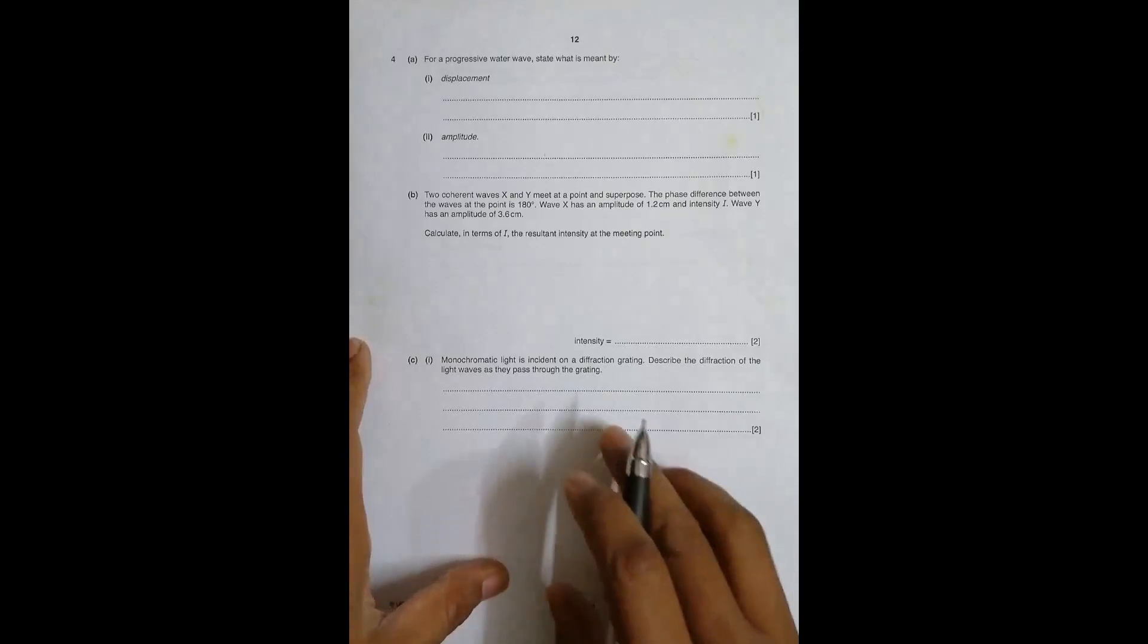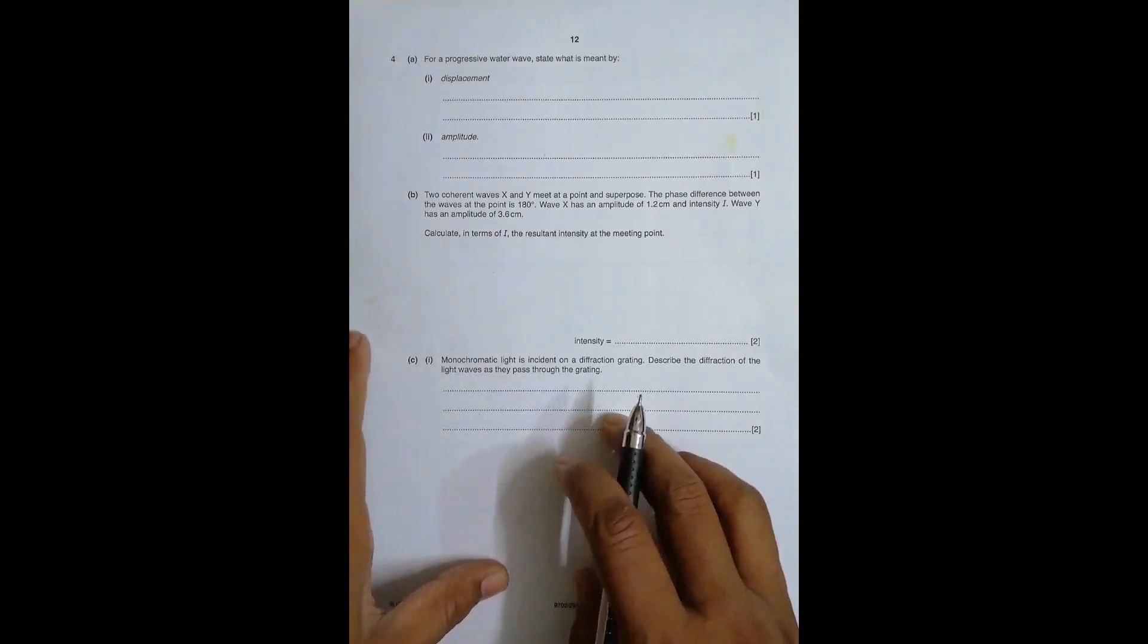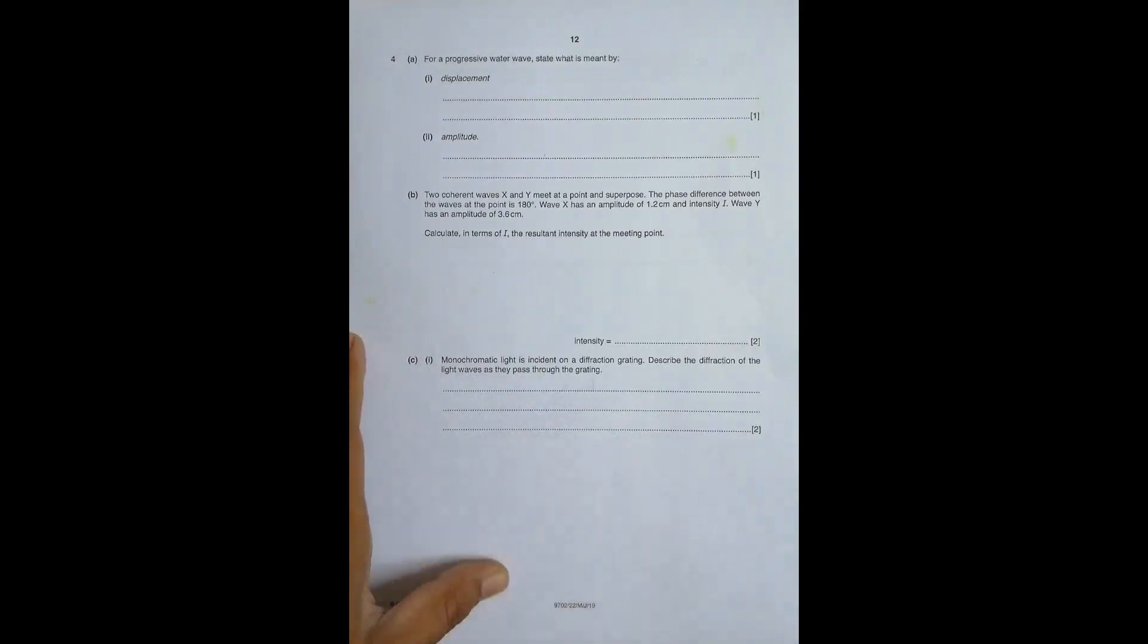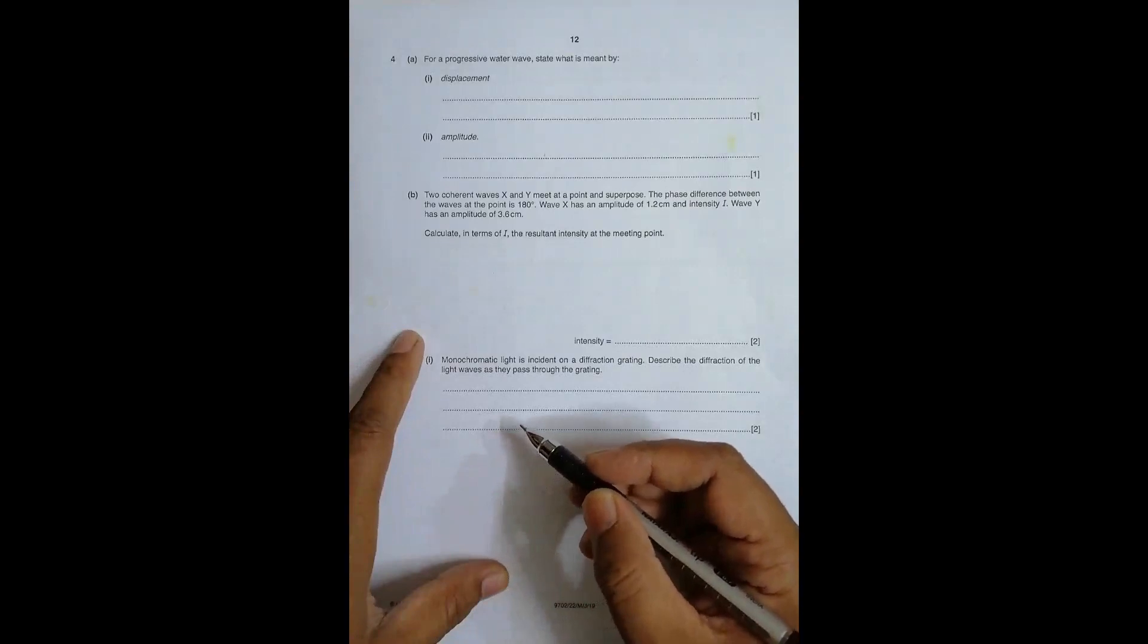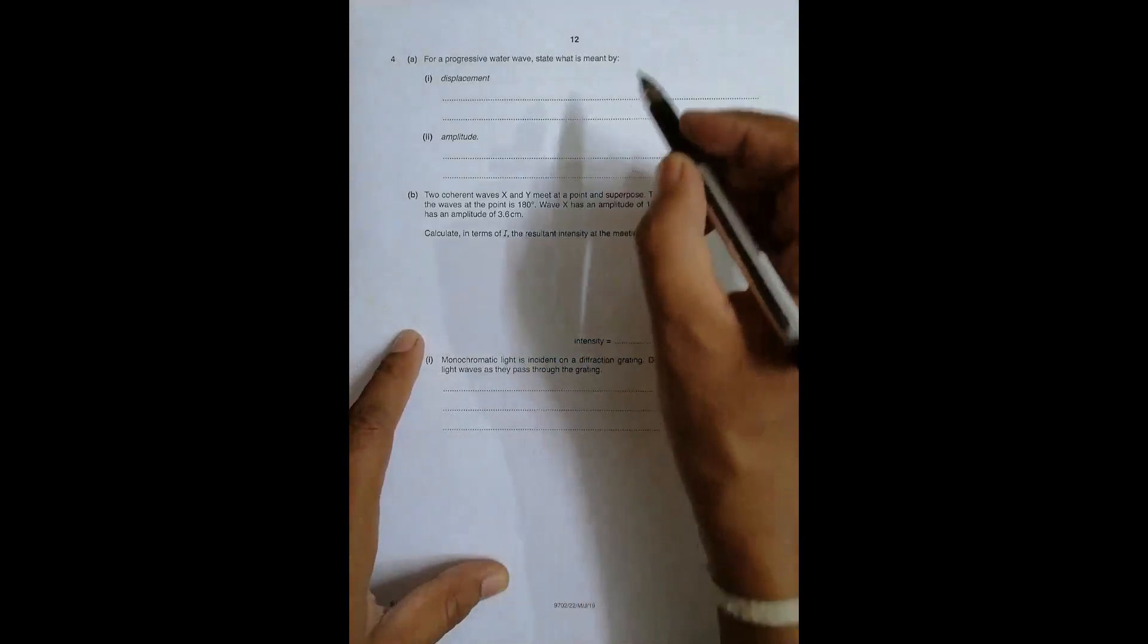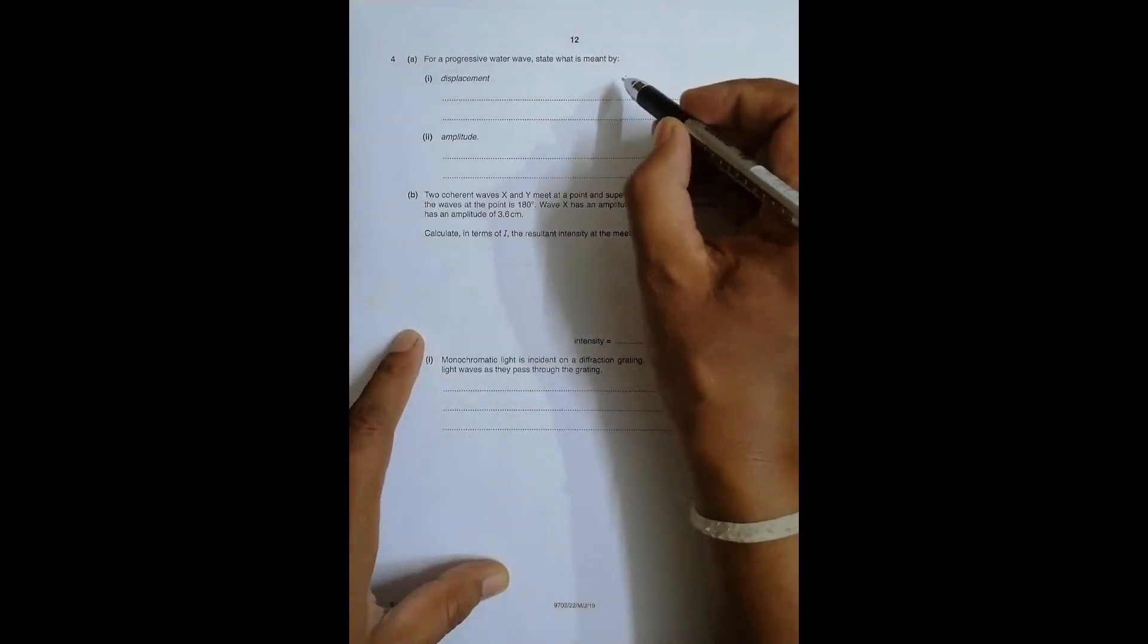The tricky part is in C2 actually. So the first page is just normal and it's only on the second page that things will start. The first two things are for progressive waves. Part A states: what is meant by displacement? So it is the distance covered by the particle, the distance of the particle at the moment from the equilibrium point.